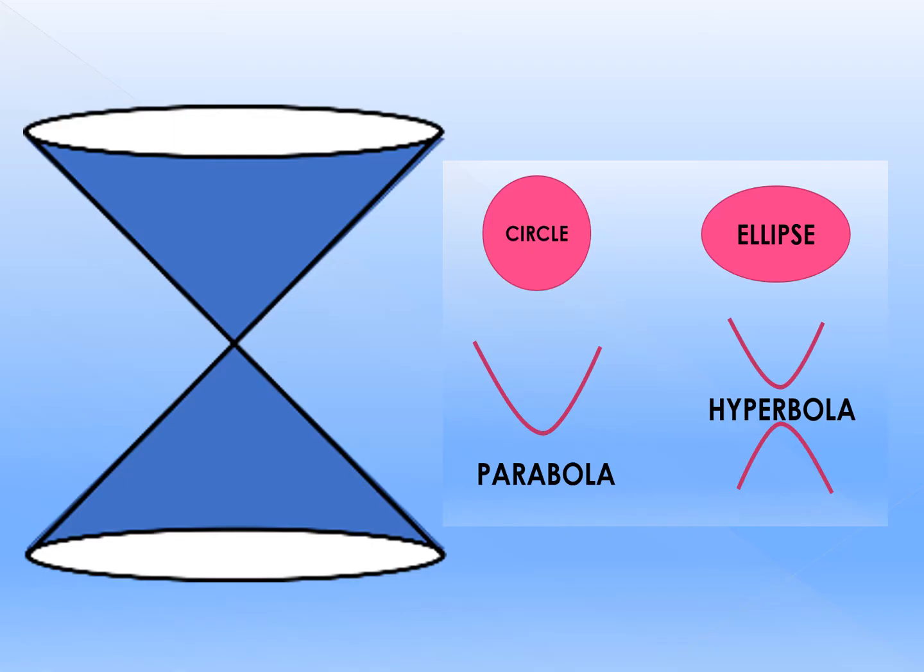Number two. When the plane intersects only one cone to form an unbounded curve, which of the following types of conic sections will be formed?